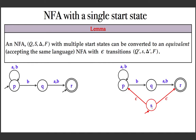I added a state and added epsilon transitions to the initial states of the given NFA. Without consuming an input, by taking the epsilon transition, I can either reach P or R, both of which are start states in the given NFA. It is easy to see that the language is the same, because I start and without reading the first symbol I can reach either P or R, which is like having P and R as start states.